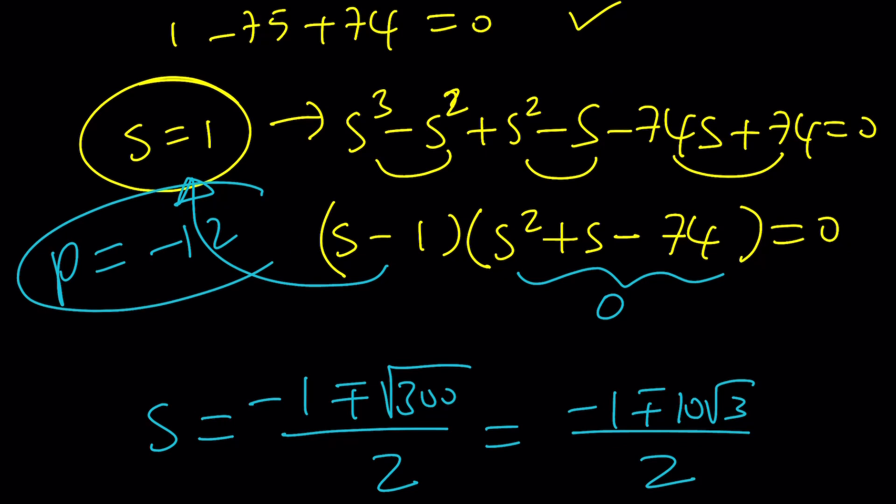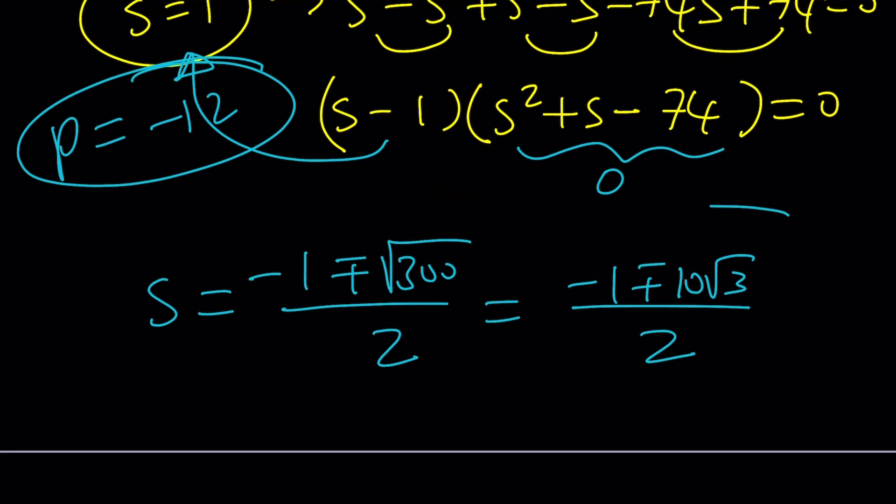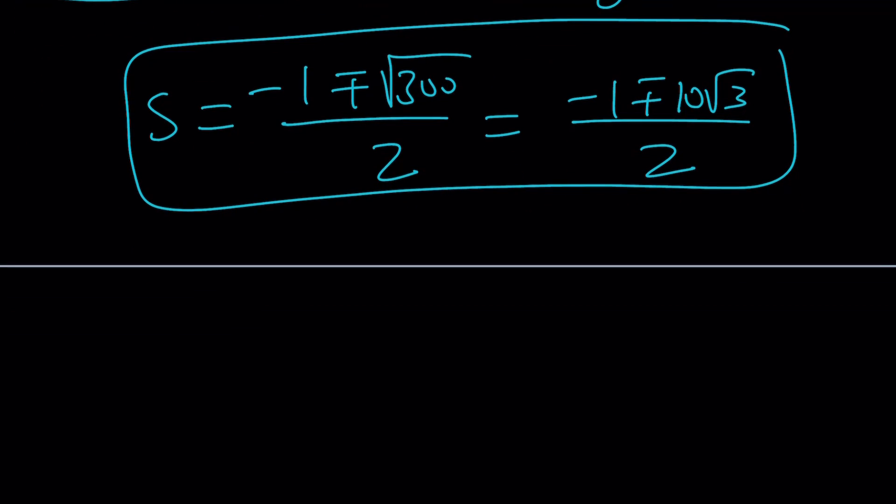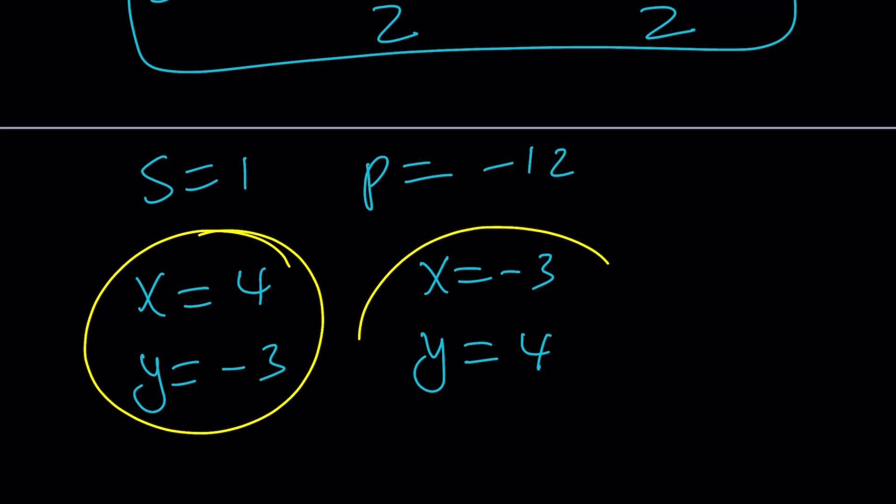And this gives us a system. s equals 1, p equals negative 12. So from here, hopefully you can guess two numbers whose product is negative 12 and whose sum is 1. I'm thinking those numbers must be 4 and 3, but one of them is a negative. And guess what? They could be x equals 4 and y equals negative 3. Their sum is going to be positive 1. And x could be negative 3 and y equals 4. Because we have perfect symmetry, they can just switch around.